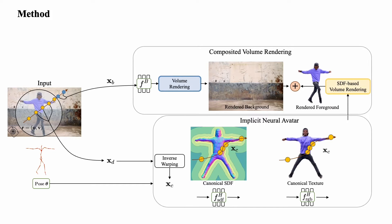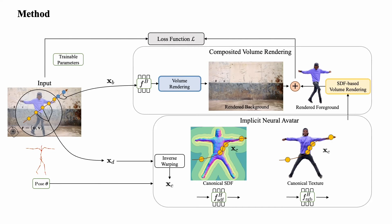The resampled points are used to query the SDF and colour values. We uniformly sample the outside volume. Then, we apply SDF-based volume rendering for the dynamic foreground and standard volume rendering for the background, and composite both components to attain the final pixel colour. We compare these predictions to the input RGB observations, and jointly optimize the background model, the canonical human shape and texture, and per-frame human pose parameters, guided by novel scene decomposition objectives that lead to cleaner foreground separation.